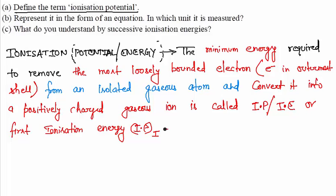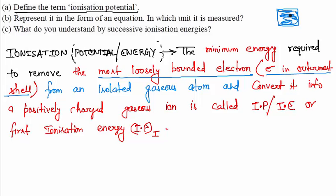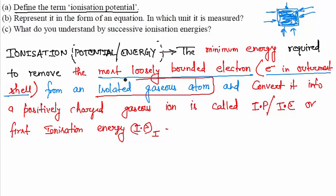Now look at this definition — there are a few terms that are very important and you have to include them when writing the definition of ionization potential or energy. First, 'most loosely bounded electron' means the electron in the outermost shell. When you're breaking something, like breaking a wall or a brick, you start from the outermost side.